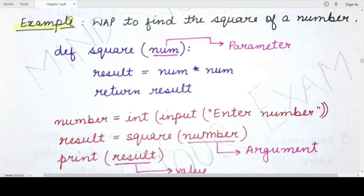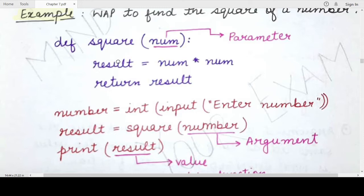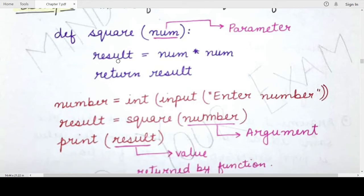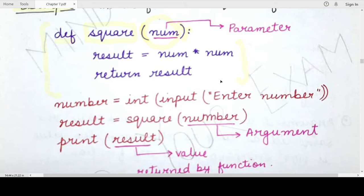Now we will see an example. In this example, we will write a program to find the square of a number, and the number whose square we have to find will be passed as a parameter. Here we have defined a function using the def keyword in the function header, and we have given the name of our function as square. We have specified the round brackets and colon, and inside the round brackets, we have specified our parameter which is the variable num. We will use this variable num inside the function body and calculate the variable result, which is the square of this number. In the last statement, we will be returning the calculated value to the function call statement.